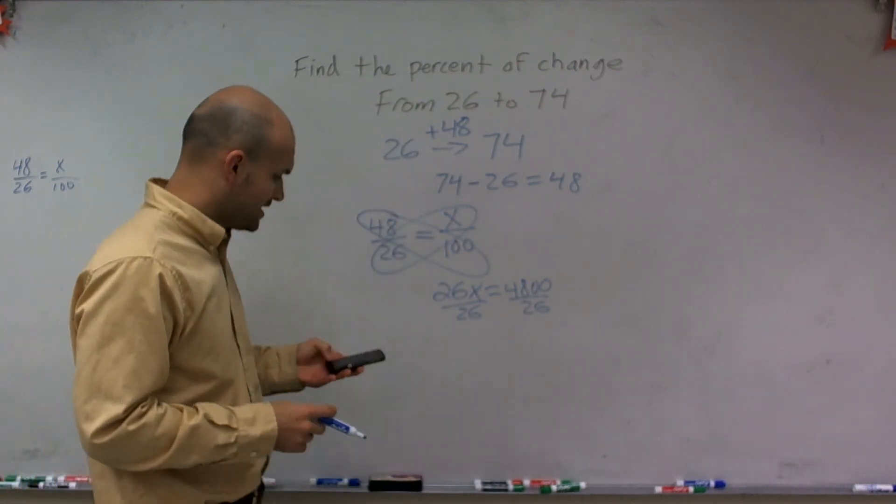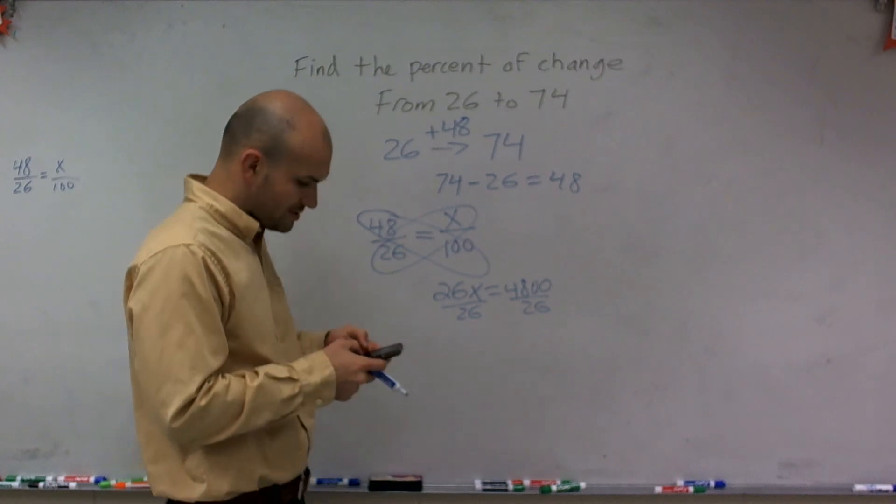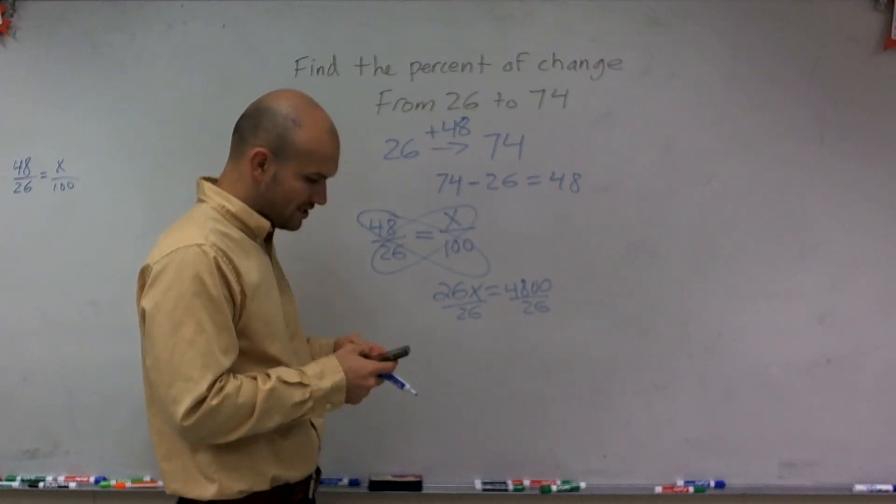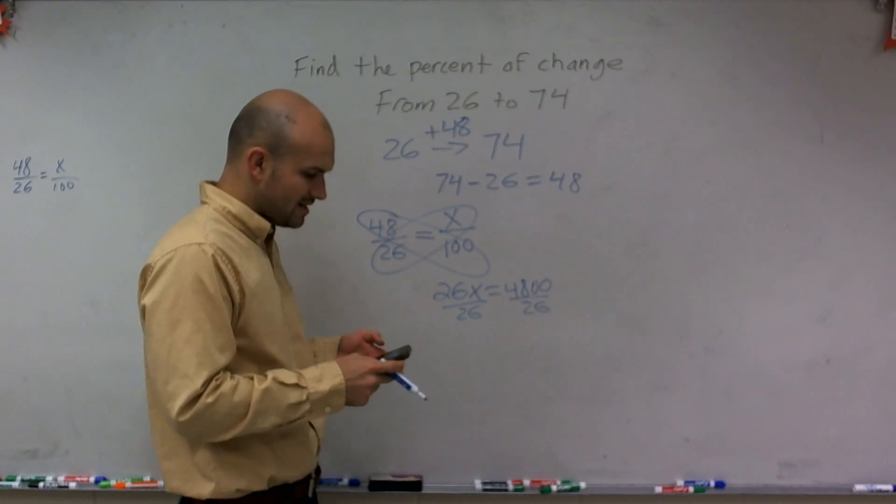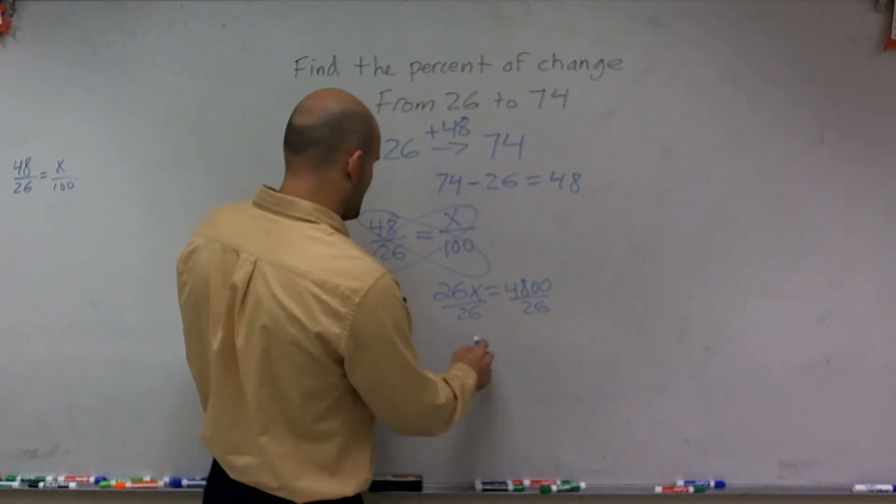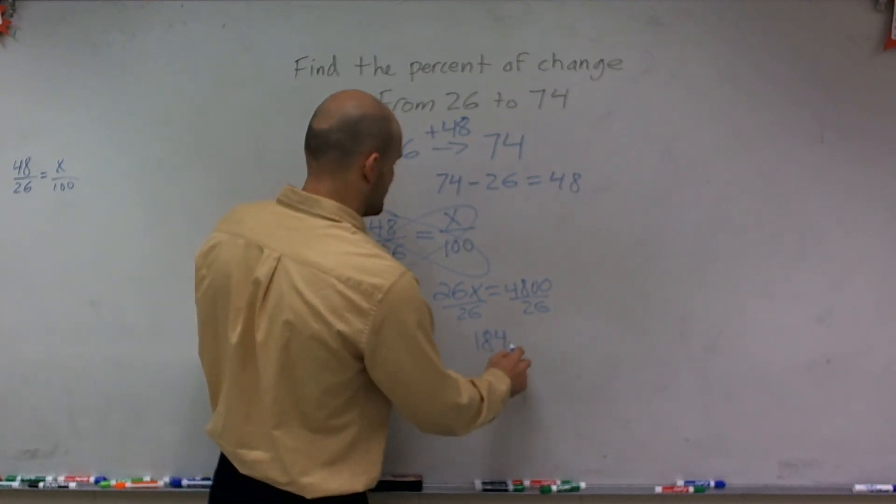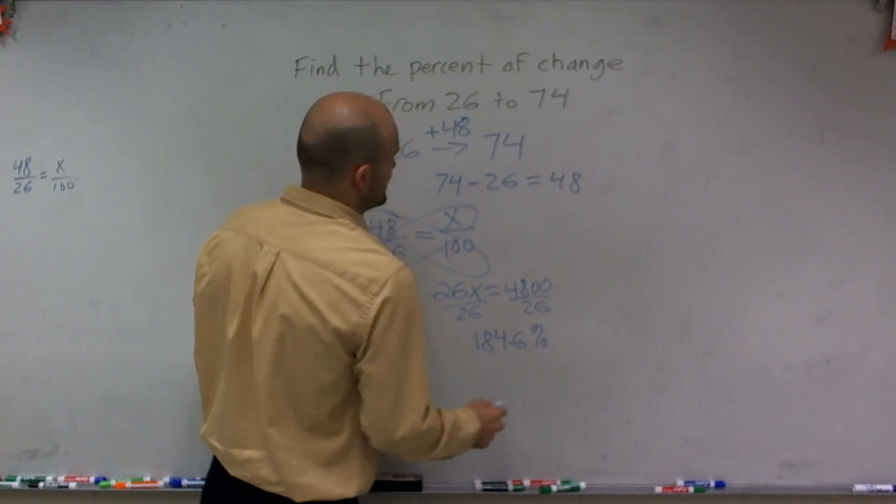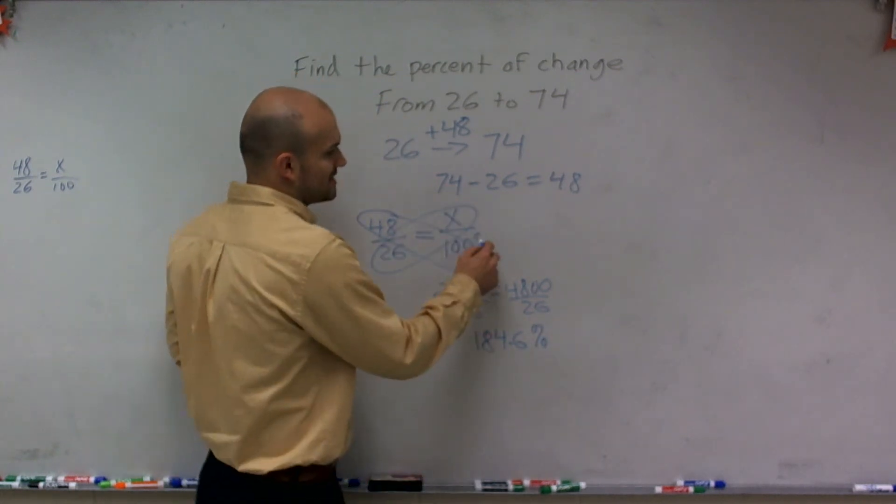Then let's use our calculator. So I have 4,800 divided by 26, and I'm going to get 184.6%. Now, one thing I could have changed here is that's out of 100%.